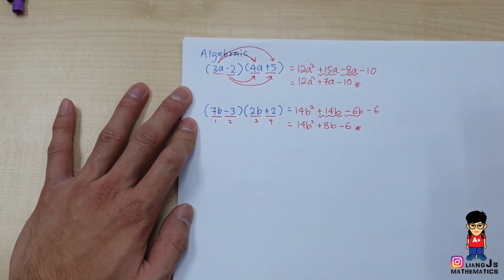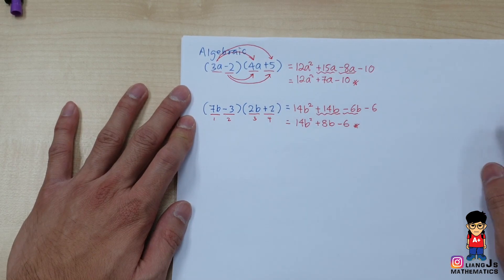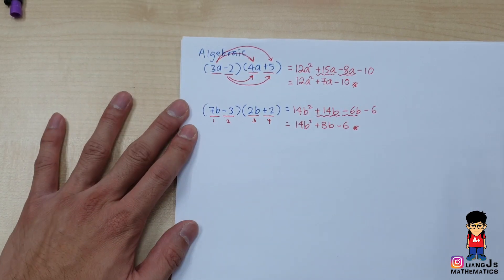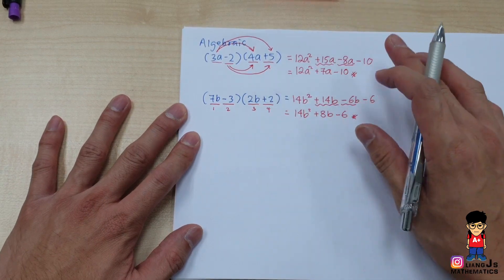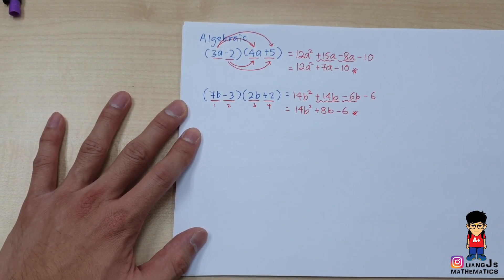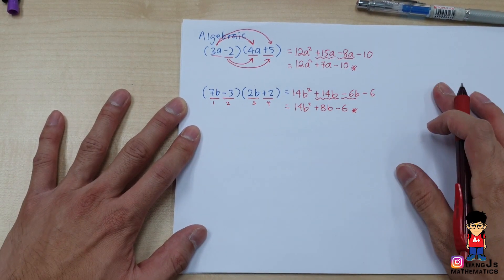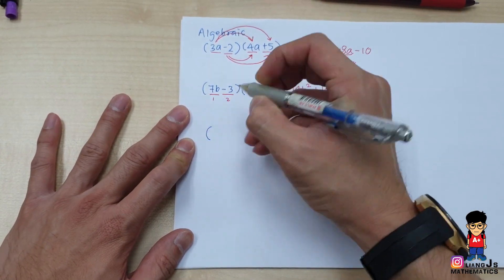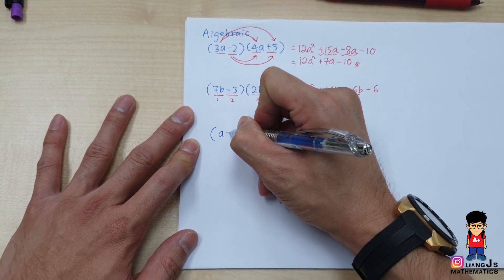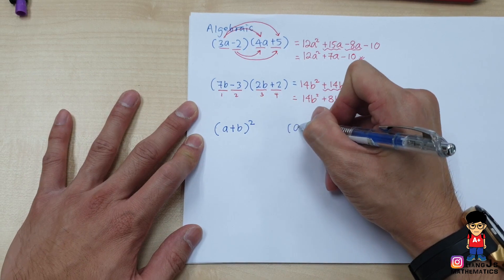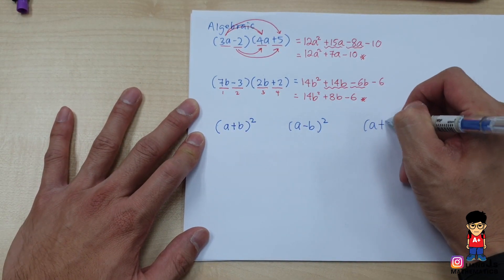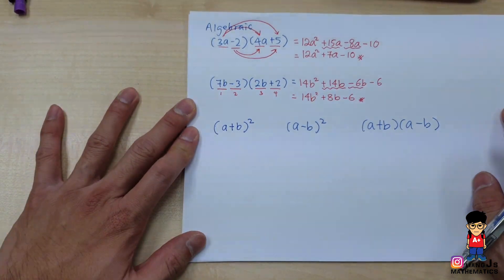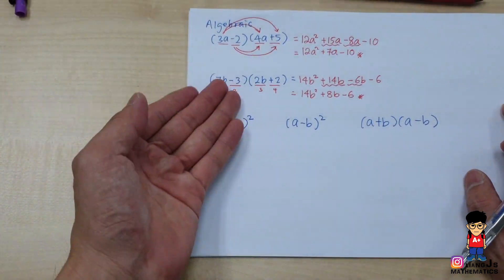That was the general version of multiplying brackets. When it comes to Form 4, this is named quadratic, but for now we focus on Form 1 to 3. In your textbook they write three patterns: (a plus b) squared, (a minus b) squared, and (a plus b)(a minus b). These are three different patterns but the working method is the same.